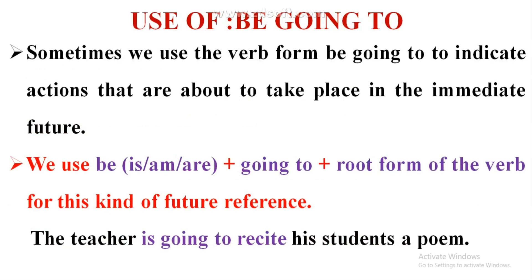Next is the use of 'be going to.' Sometimes we use the verb form 'be going to' to indicate actions that are about to take place in the immediate future. We use 'be' — that is, 'is,' 'am,' or 'are' — plus 'going to' plus the root form of the verb for this kind of future reference.